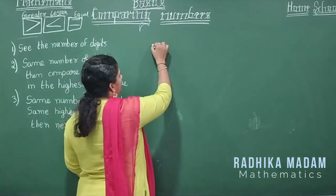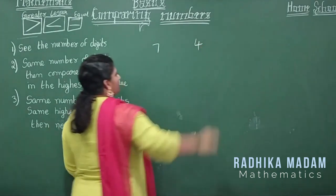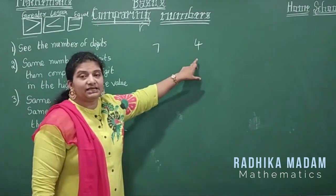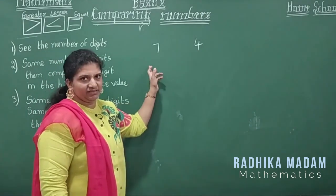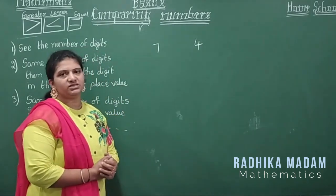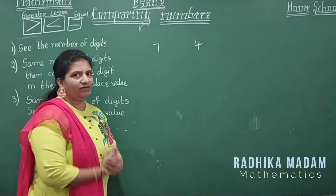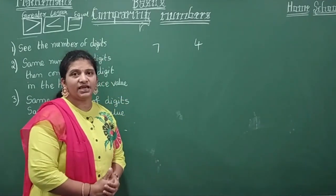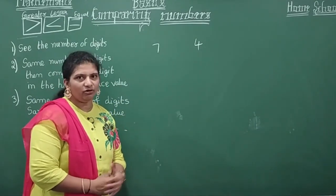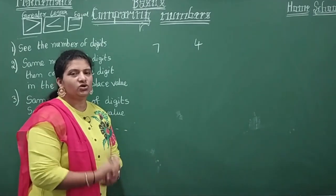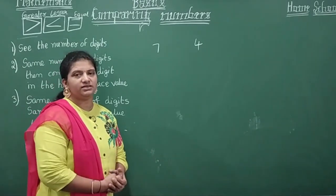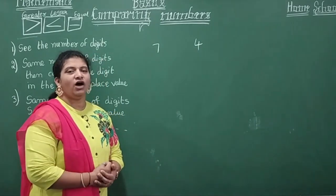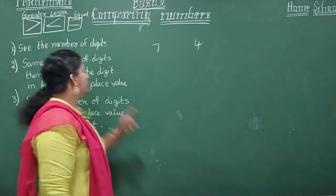Let me take seven and four — these are single digit numbers, and their place is the units place. Now, when we are talking about these two numbers: suppose your mummy has given you seven pencils, and for your brother she has given four pencils. What do you say? 'Hey, I have more pencils than you!' You are comparing the numbers. When you say 'more,' it means greater; when you say 'less,' it means lesser.